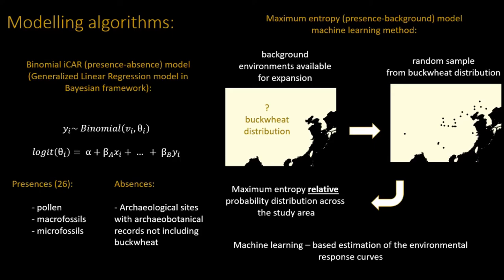The Bayesian model I'm using specifically is the binomial logistic model. It assumes that the likelihood of finding buckwheat in any location is distributed binomially — it can have a value of 0 or 1 — and it depends on how many times you look at a place, i.e. how many trials you had. In our case only one, because if you have archaeological sites you check those sites once, and the probability is whether buckwheat was actually present at the site.